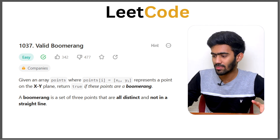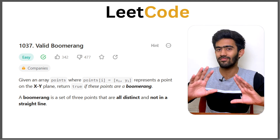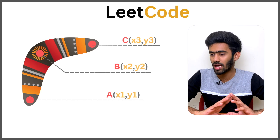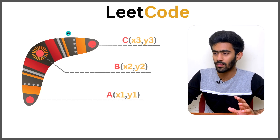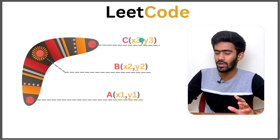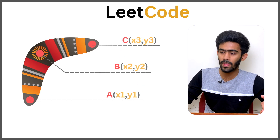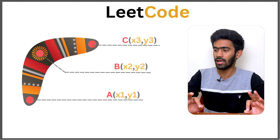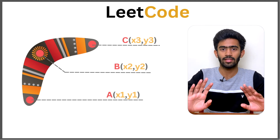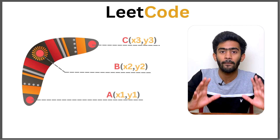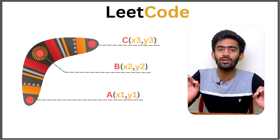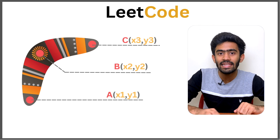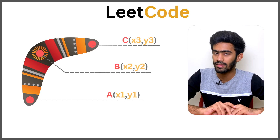So this question is solved given a set of 3 points. What we have to do is check if they are equal or not. The concept used here is called collinearity — the condition that the points lie on a straight line.